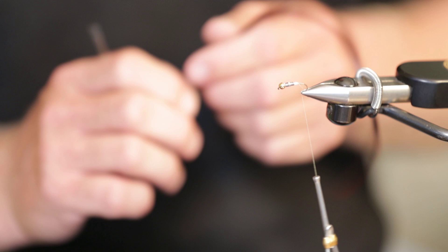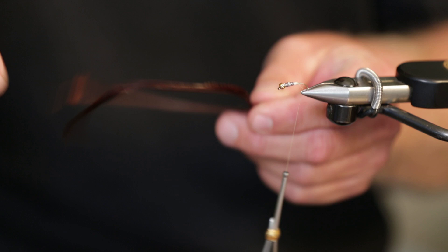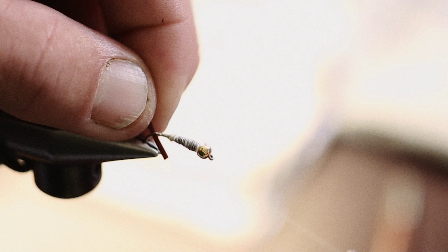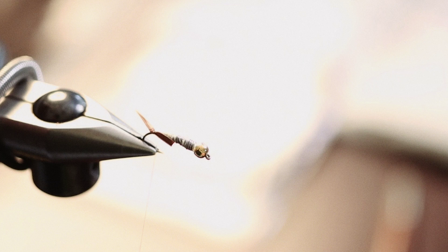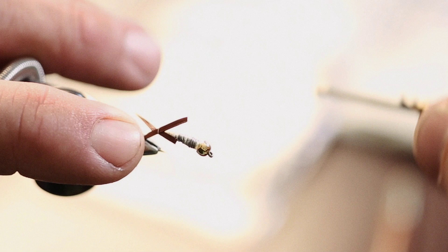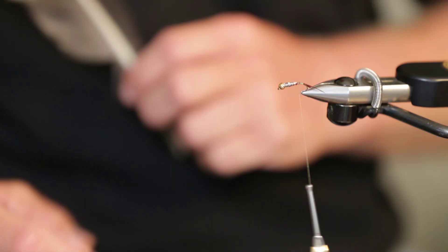We've got our thread back at the bend of the hook. We're going to use some dark brown turkey biots. I'm going to snip two of those off the quill there. We're going to tie those in. I like to tie mine in so it's a very broad tail. Stoneflies have very obvious tails, two tails on a stonefly. We're just going to kick them out at a 45 off the back of the hook. I lay my hand on the back of the vise, use my fingertip to hold that in place.